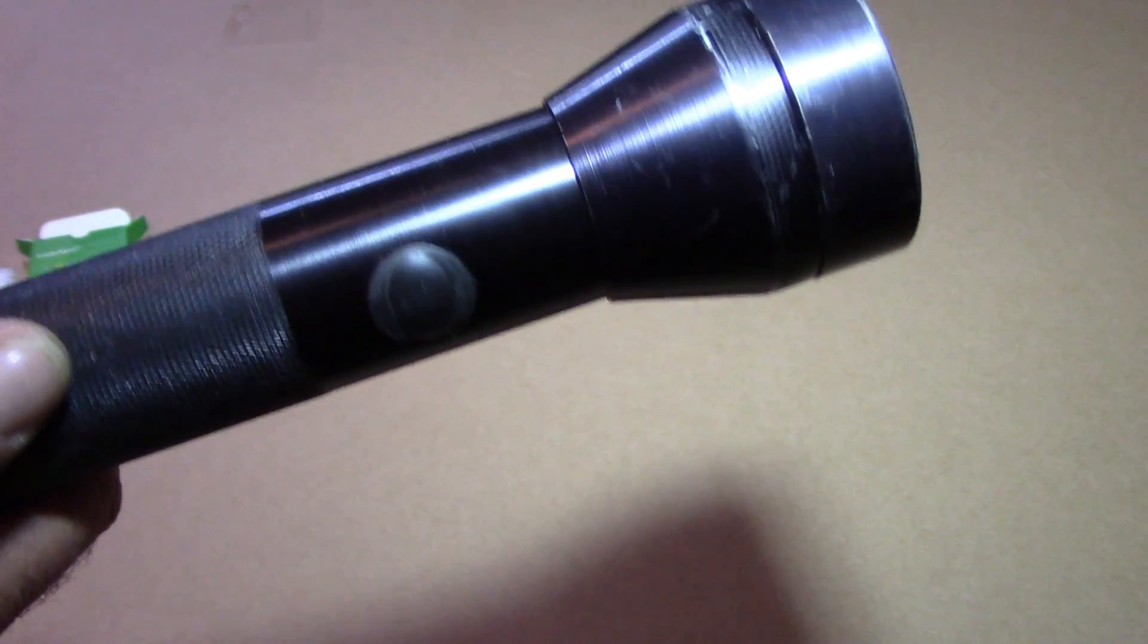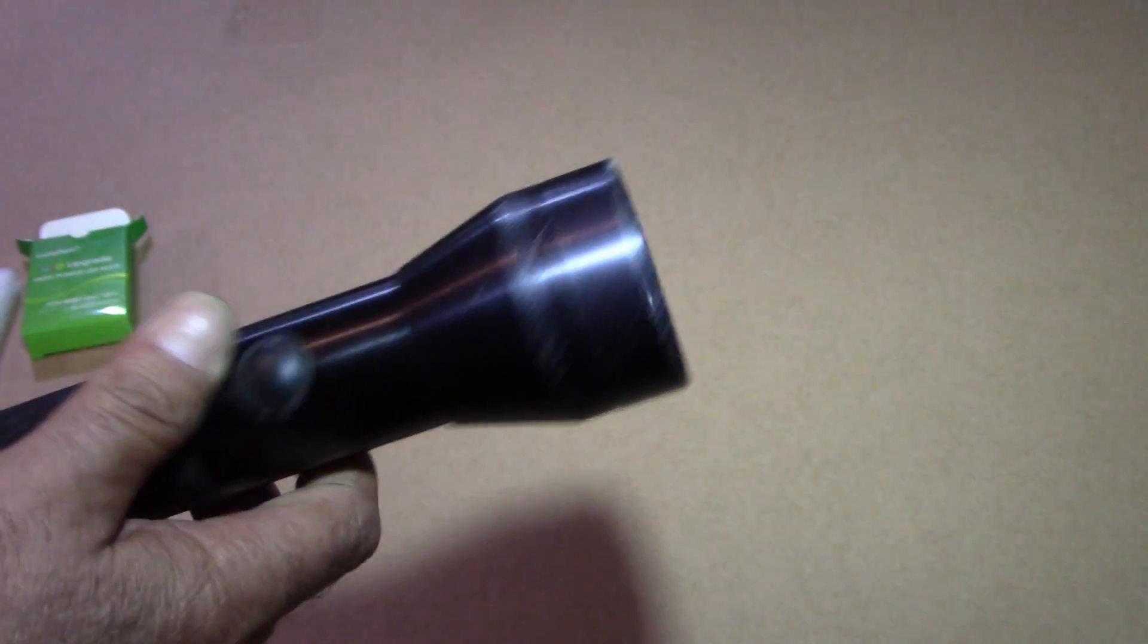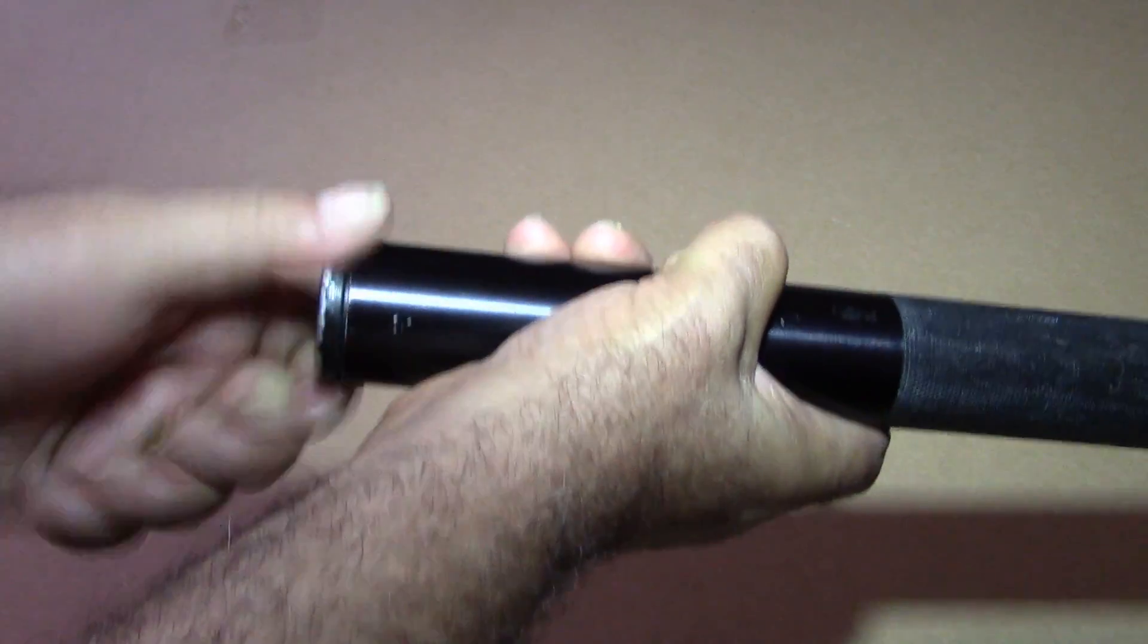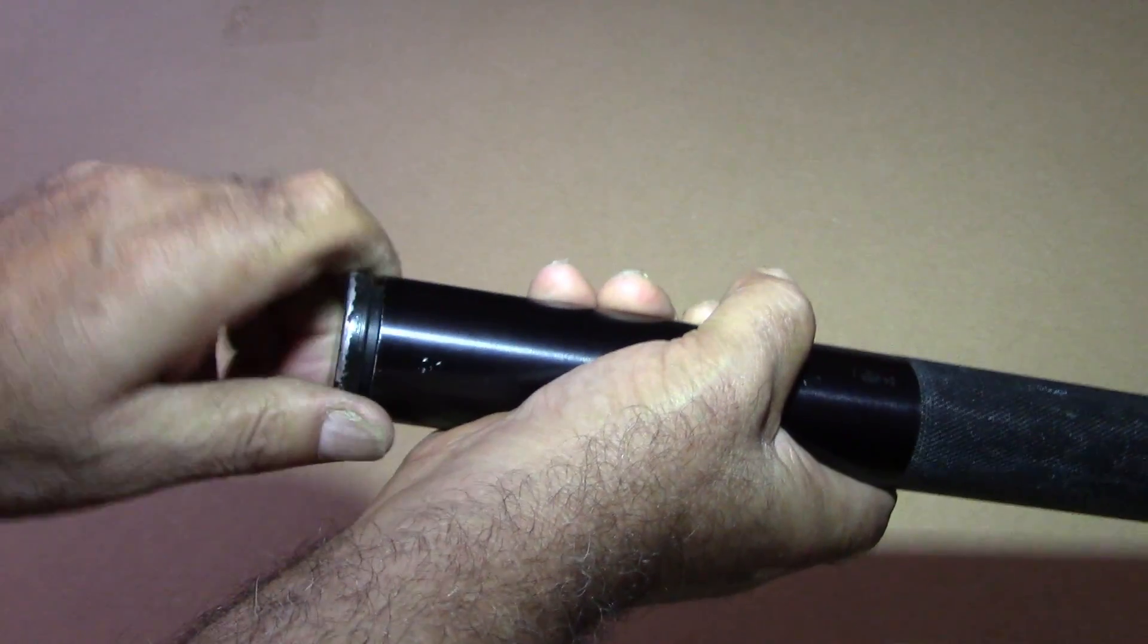These things are very heavy. Before removing the batteries, here's what the light looks like with the old bulb. First thing is to take out the 4D battery by unscrewing the cap here and sliding them out.